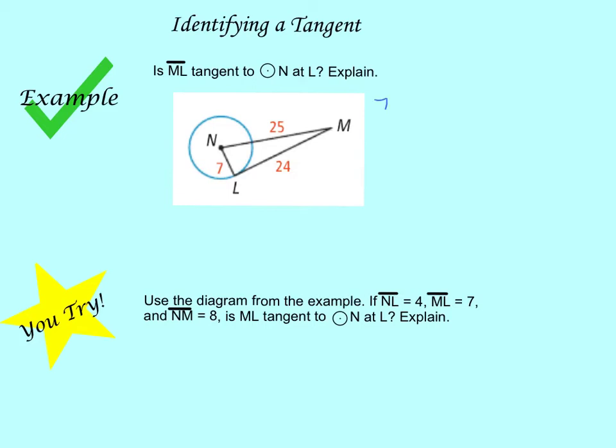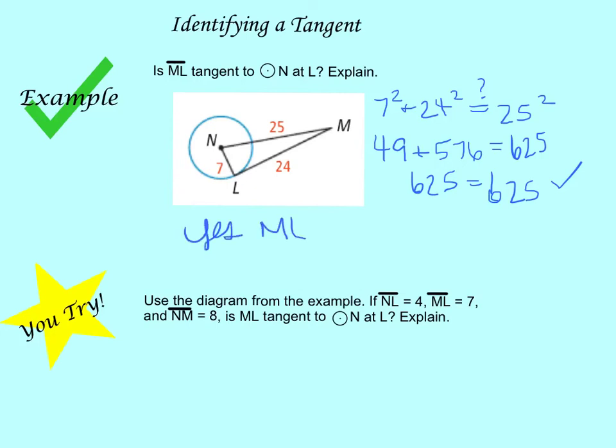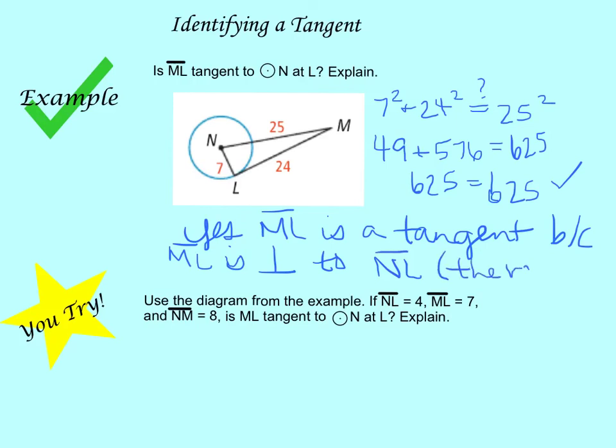So let's set it up. 7 squared plus 24 squared. Does that equal 25 squared? Well, 7 squared I know is 49. 24 squared is 576. And 25 squared is 625. So 576 plus 49. Oh, perfect. 625 equals 625. Check, it works out. So yes, ML is a tangent because ML is perpendicular to NL, the radius. So because Pythagorean theorem checks out, we do know that that is a tangent. And then you go ahead. This is your You Try for that problem.